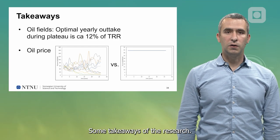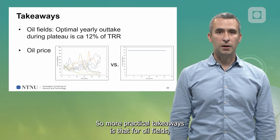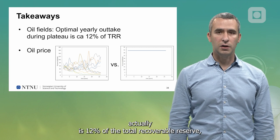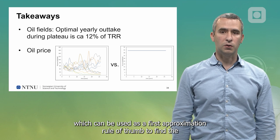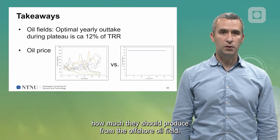Some takeaways of the research, some more practical takeaways, is that for oil fields, the optimal yearly outtake we found for many cases is actually 12% of the total recoverable reserve, which can be used as a first approximation rule of thumb to find how much I should produce from an offshore oil field.